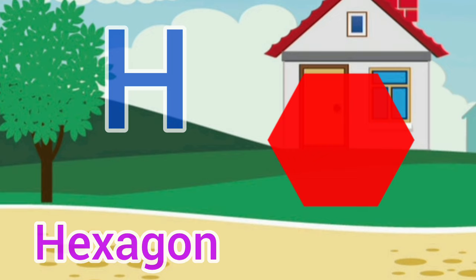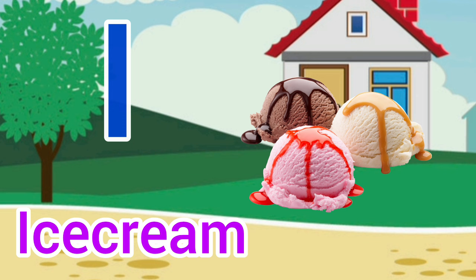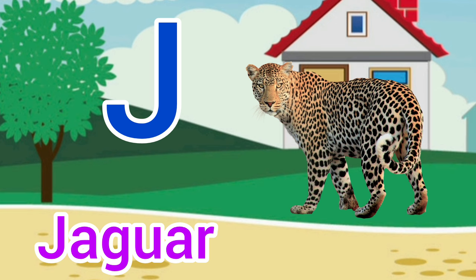I for ice cream, ice cream means ice cream. J for jaguar, jaguar means tendua.